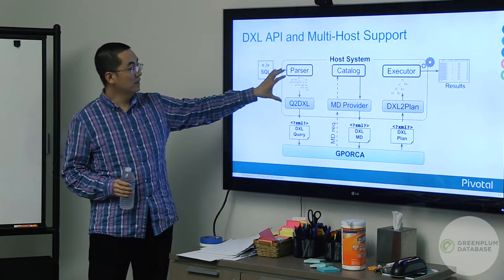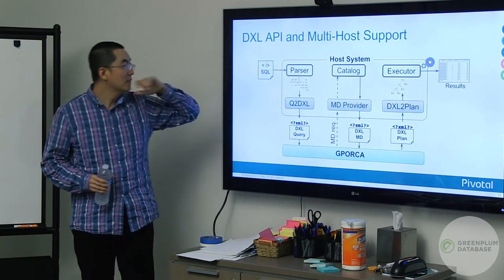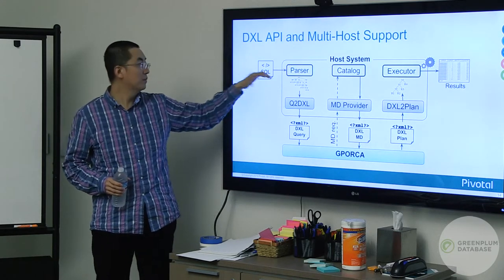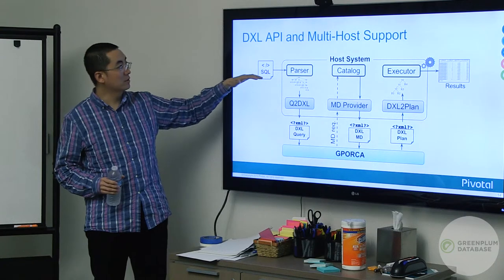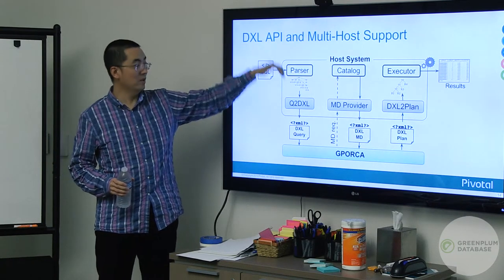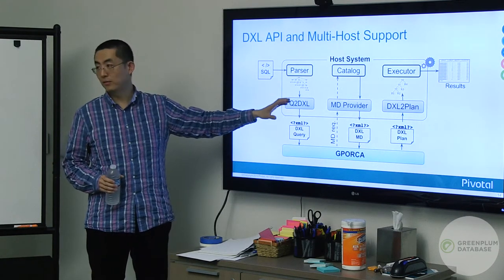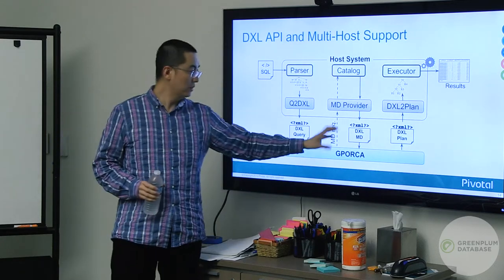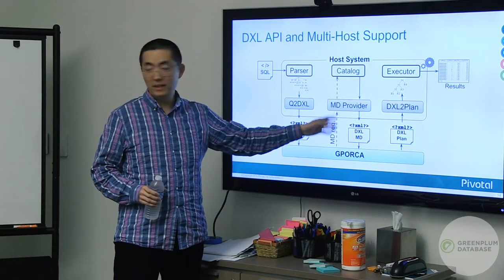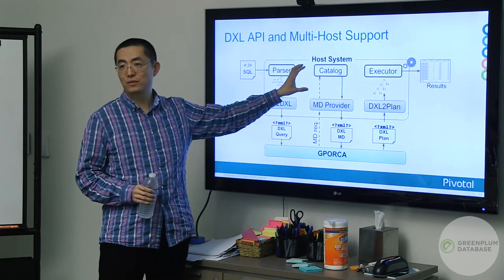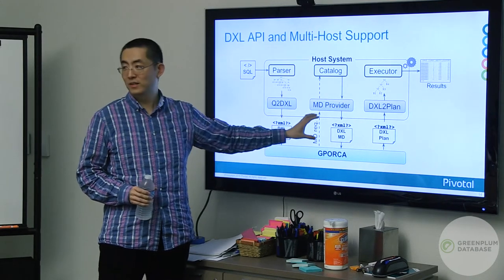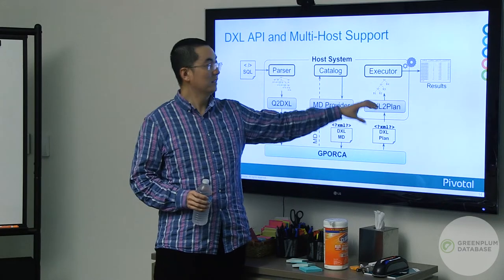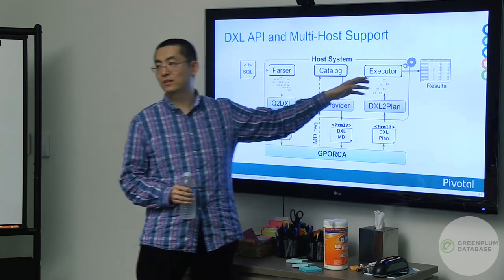For GPDB, we use the parser from the host to parse the original SQL string and translate it into the DXL format, which is sent to GP-ORCA. During optimization, we go through the metadata provider to talk to the host and grab all metadata information. At the end, we produce the best plan, give it back to the executor, and execute it.